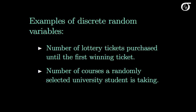Here are a couple of examples of discrete random variables. The number of lottery tickets purchased until the first winning ticket — we might get a winning ticket on our first ticket, or we might have to wait until our second or third, with no upper bound. Even though this goes off to infinity, it is still a countable number of values, so it is still a discrete random variable.